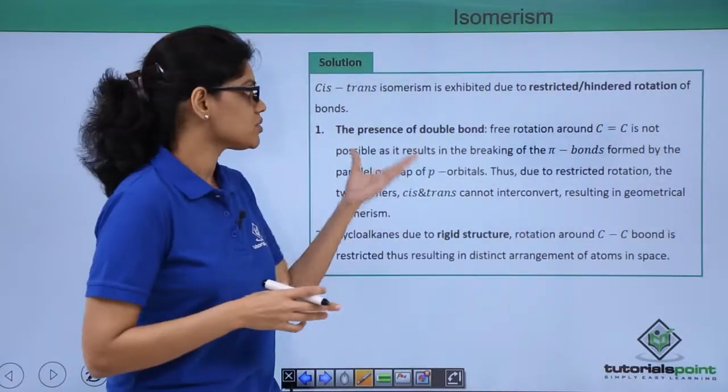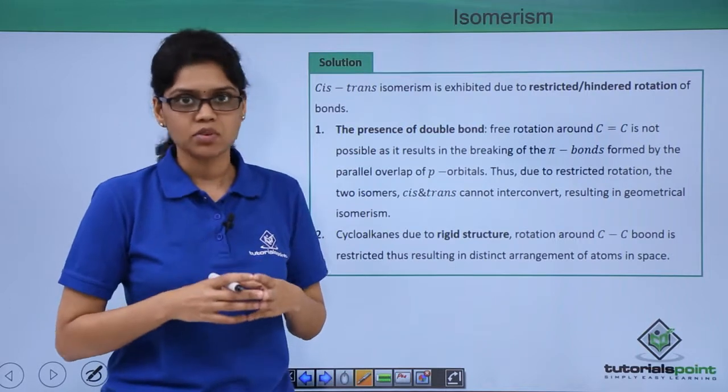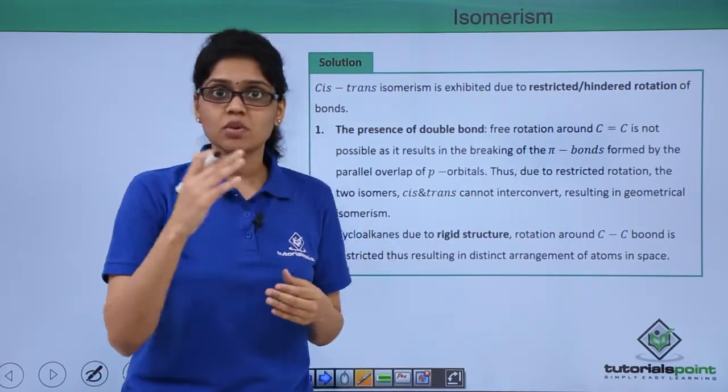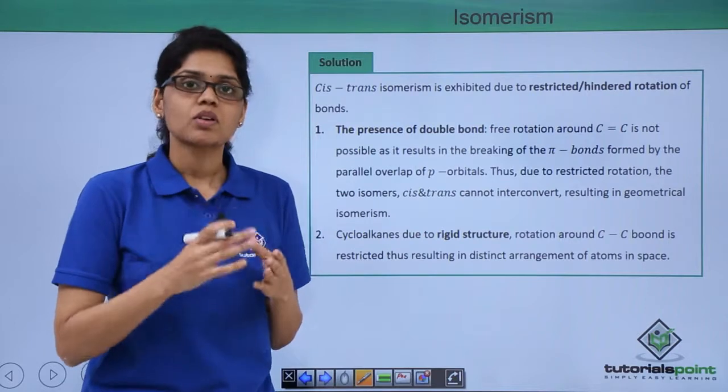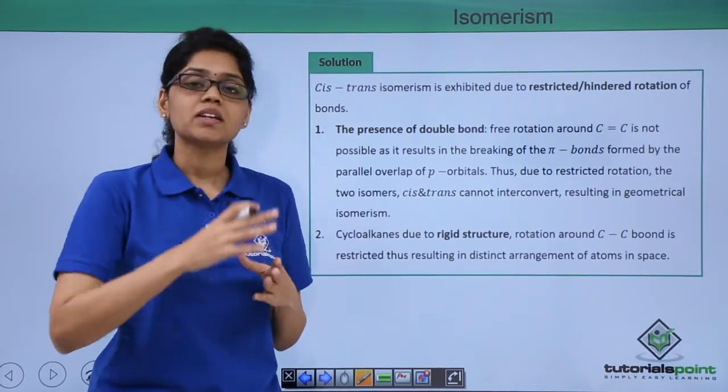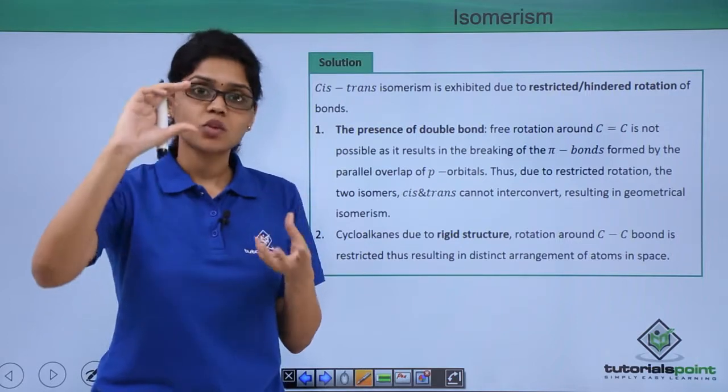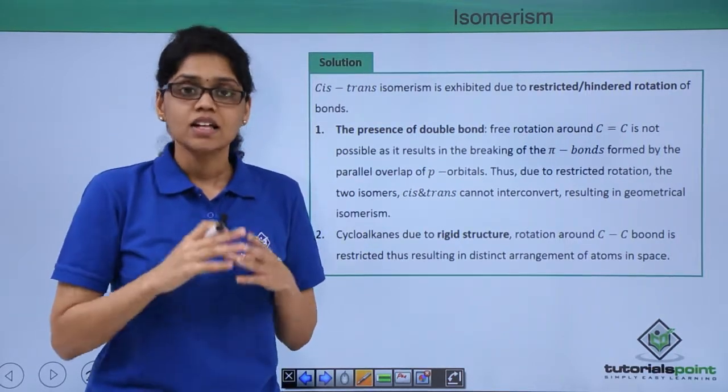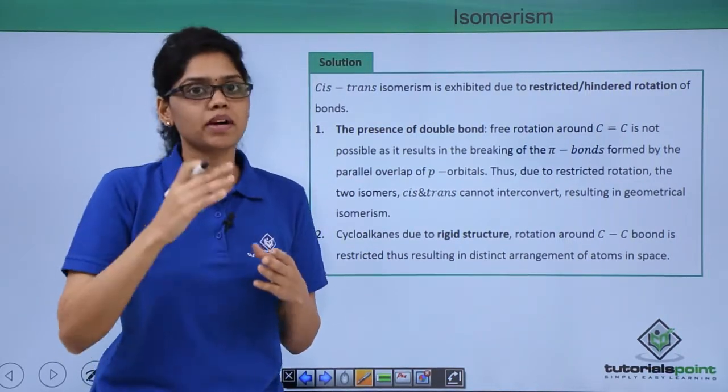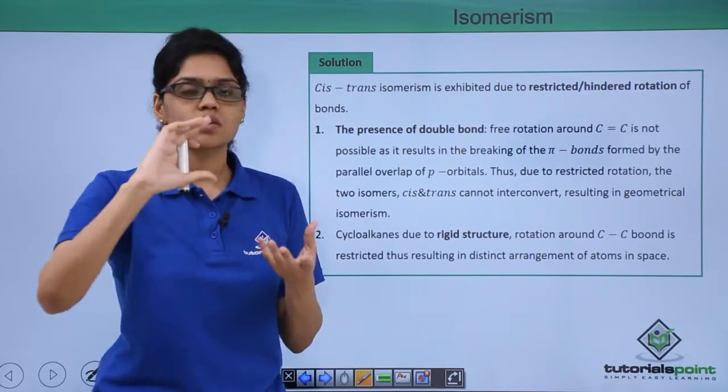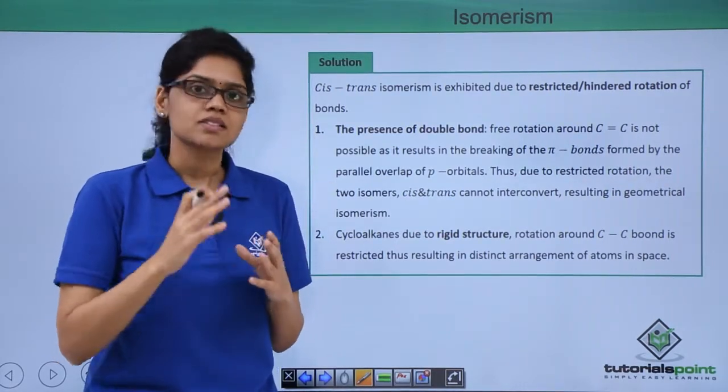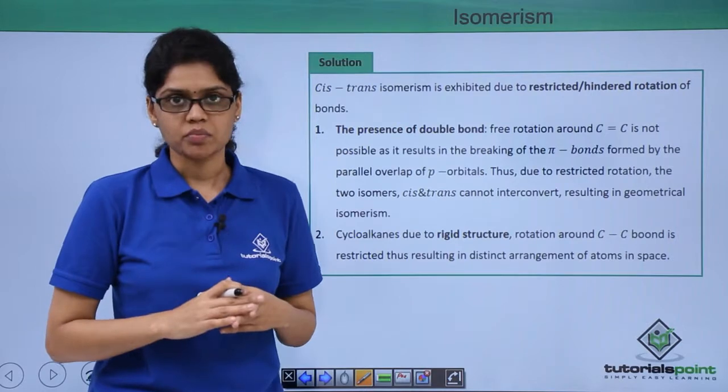Let us take the case of alkenes where we have presence of double bond. We know that the free rotation around C double bond C is not possible because the pi bond is formed essentially by the parallel overlap of p orbitals. Now if we try to rotate the groups around the C double bond C, then we essentially end up breaking the pi bond, that is the p orbitals are no more parallel to each other such that the pi bonds get broken.